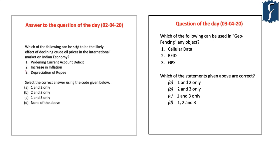Yesterday's question of the day was: which of the following can be said to be the likely effect of declining crude oil prices in the international market on the Indian economy? Statement 1: widening current account deficit; Statement 2: increase in inflation; Statement 3: depreciation of rupee. The right answer is D — none of the above — because these are consequences of increasing, not decreasing, crude oil prices. Today's question is: which of the following can be used in geofencing any object? Statement 1: cellular data; Statement 2: RFID; Statement 3: GPS. Options are A: 1 and 2 only, B: 2 and 3 only, C: 1 and 3 only, D: 1, 2 and 3.